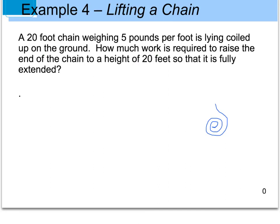Example four: a 20-foot chain weighing 5 pounds per foot is lying coiled on the ground. We want to know how much work is required to raise one end to a height of 20 feet so it's fully extended. Essentially, we take one end and pull it straight up until the chain is a fully extended straight line.